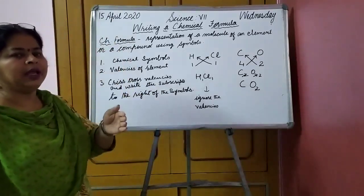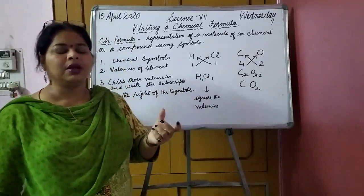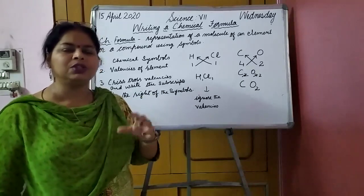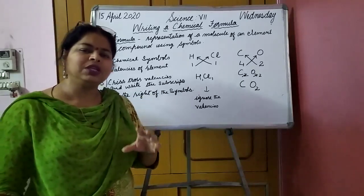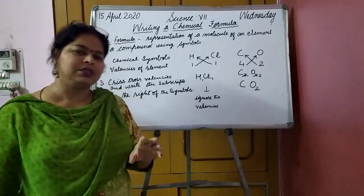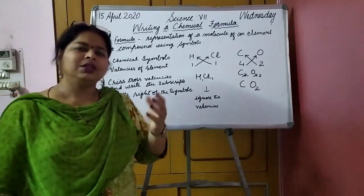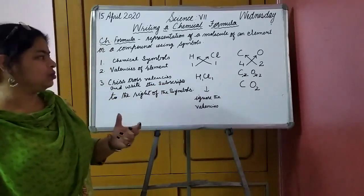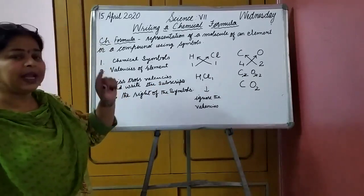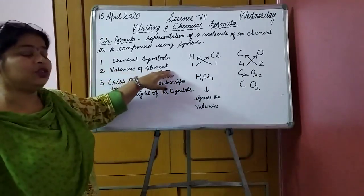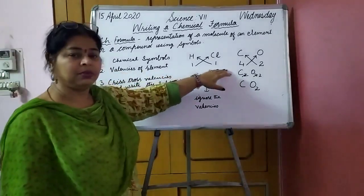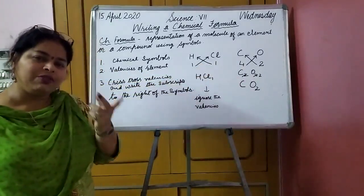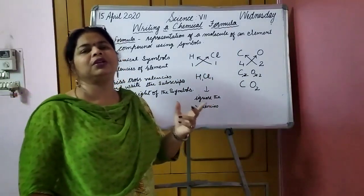So the first thing is to learn the chemical symbols — like hydrogen H, carbon C, oxygen O, sulfur S, phosphorus P. This way you need to learn all the chemical symbols. It is not very difficult to learn, because they are simply the initial letters of that particular element. Then below them you have to write their valencies. For this you need to learn the valencies of different elements. The valency, as we know, is the combining capacity of an element.